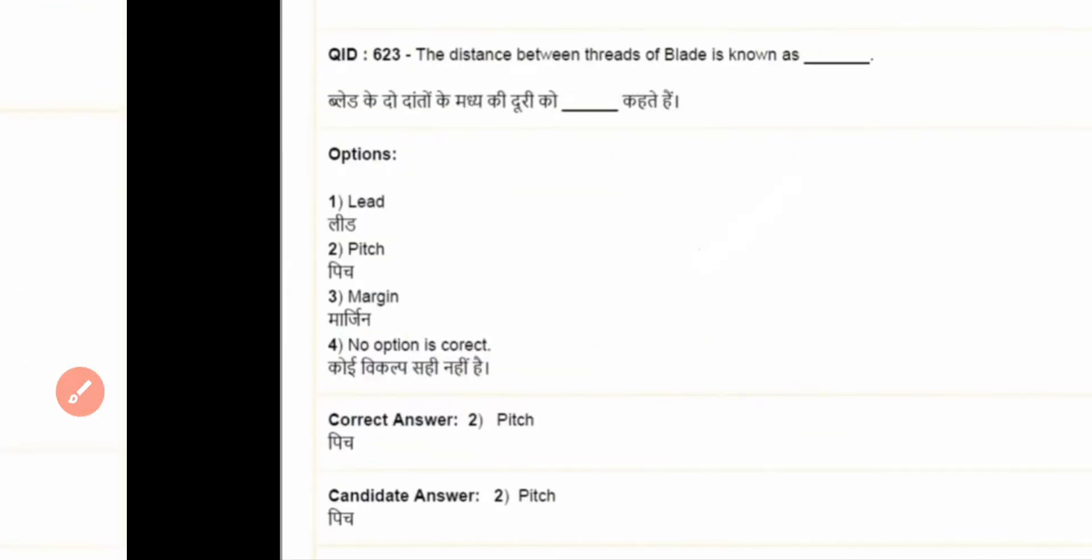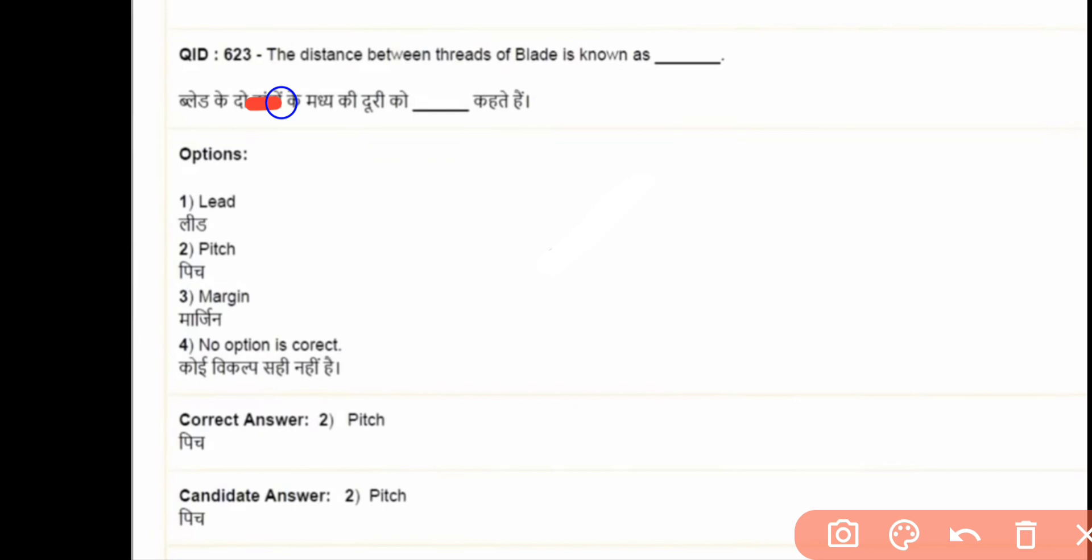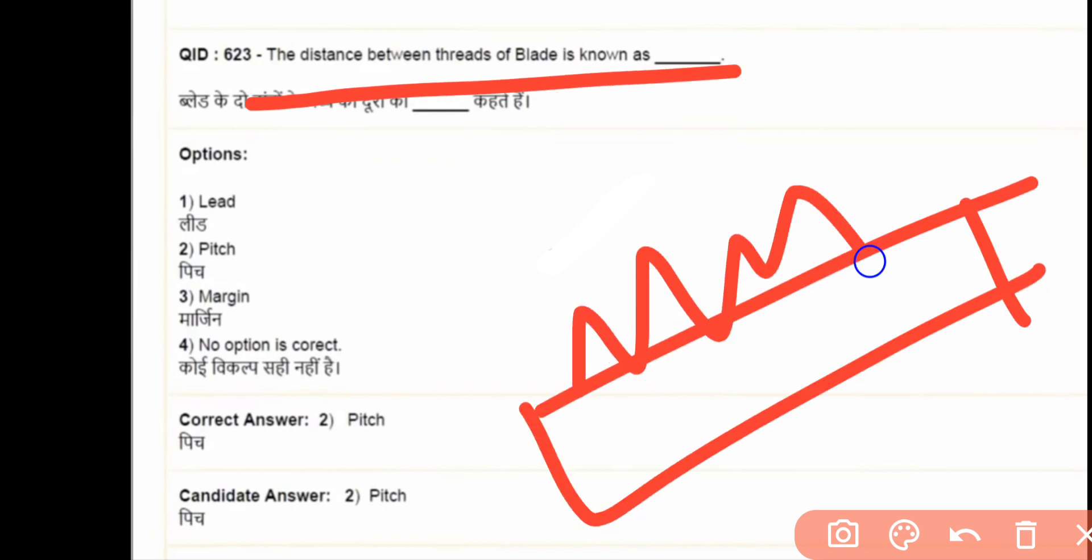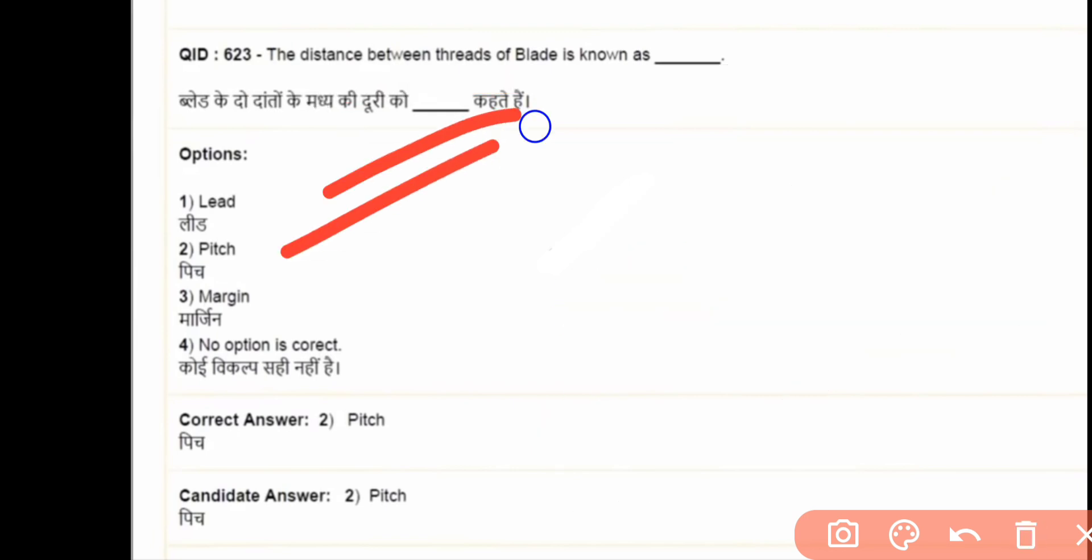Next question is the distance between threads of blood. What is the least count? Pitch margin is no option. The answer is pitch.